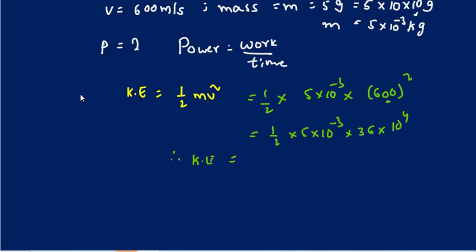The kinetic energy equals 900 joules. So 900 joules is the kinetic energy of one bullet.